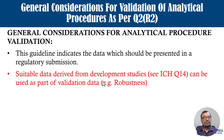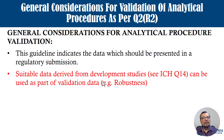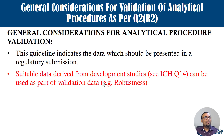Data derived from development studies can be used as part of validation data. For robustness, that performance characteristic need not be performed during the validation activity itself — it can be taken from your method development activities. ICH Q14 covers analytical procedure development. So if you conducted a robustness study as part of your design space, that same data can be used for your robustness parameter and reported in your validation report.